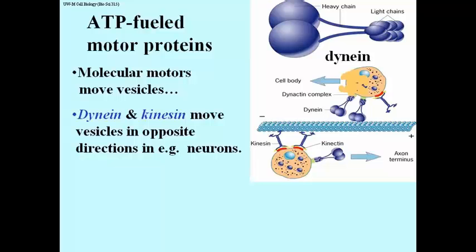There are other proteins that are associated with these complexes as well. But the main take-home message here is that dynein carries vesicles back to the cell body where they can be recycled or refilled with neurotransmitter. And kinesin carries the neurotransmitter-filled vesicle in the other direction to the axon terminus or the nerve terminus.